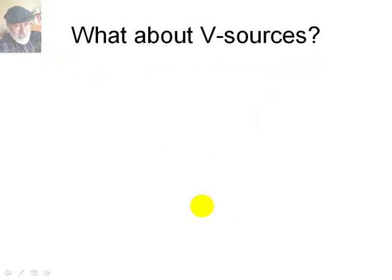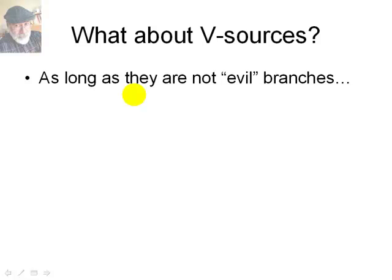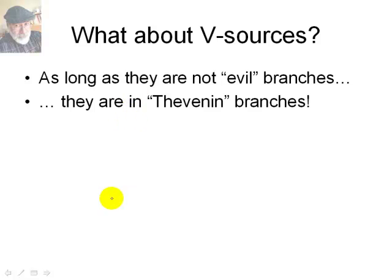What happens if we have V sources? As long as those sources are not evil branches, this will work. Why is that? Because they would be in a Thevenin branch. It would be a V source in series with a resistance, a voltage source in series with a resistor. And we know pretty well that we can transform that branch into a Norton branch with the current source in parallel with a resistor with exactly the same value that we had before RT. And this source would be Vt divided by RT as we saw in EC 251. The rest of the circuit is not affected. And now we can use the method that we have seen.